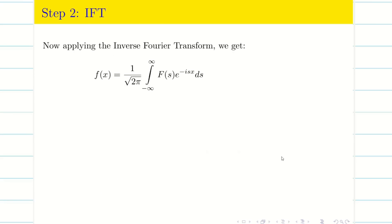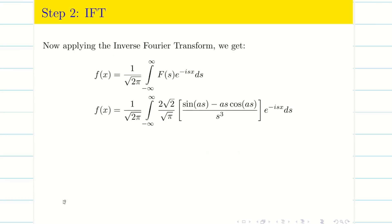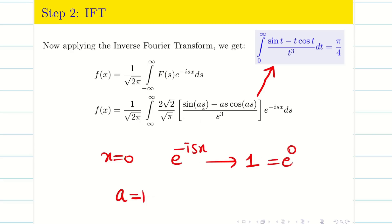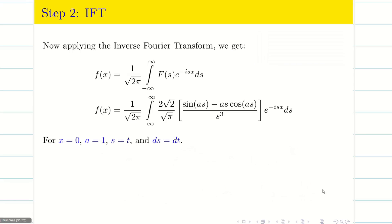Next we apply the inverse Fourier transform to find the deductions. To eliminate unwanted terms, we put x = 0 (which makes e^(-isx) = 1) and a = 1, reducing the expression to (sin s - s·cos s)/s³. Then putting s = t and ds = dt converts everything to the target form.